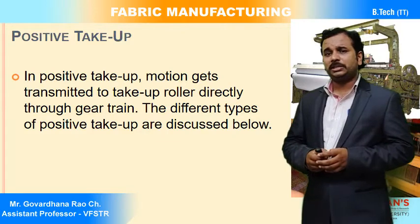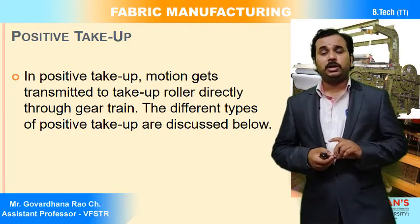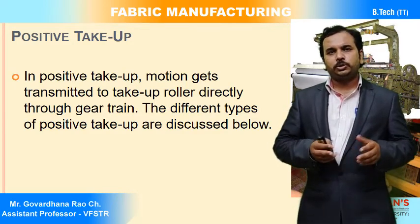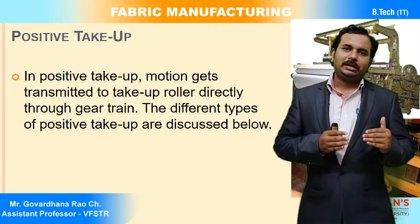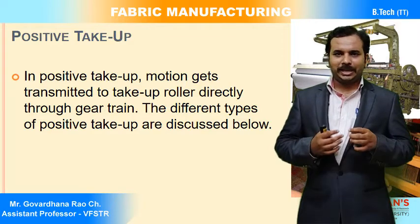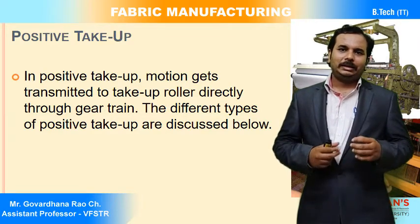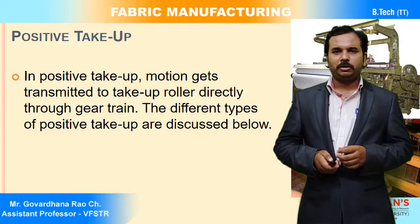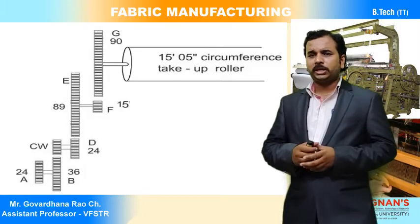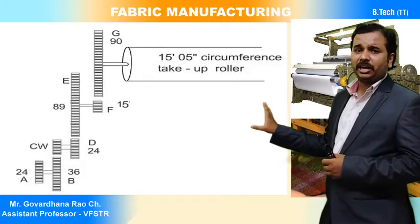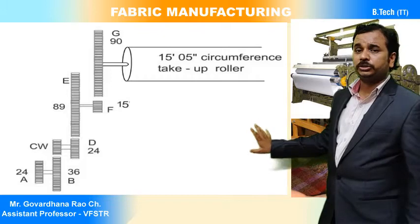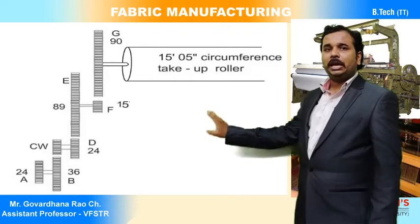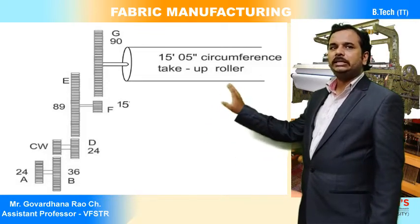Positive take up mechanisms transmit motion to the take up roller directly through a gear train. The seven-wheel take up motion contains seven gear wheels: A (ratchet wheel), B (standard wheel), C (change wheel), D (change pinion), E (stud wheel), F (stud pinion), and G (emery roller end wheel).